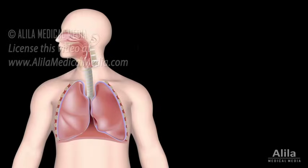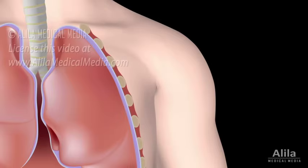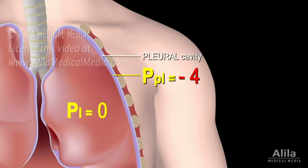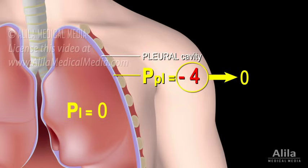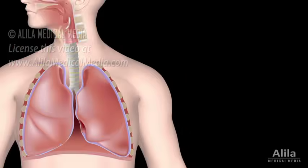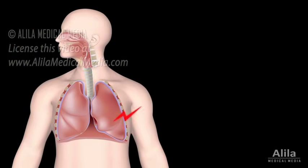The lungs are covered in a double-layer membrane, which forms a thin space surrounding the lungs called the pleural cavity. The pressure within the pleural cavity, or intrapleural pressure, is normally negative. This negative pressure acts like a suction to keep the lungs inflated. If this becomes zero, such as in the case of pneumothorax, when the chest wall is punctured and the pleural cavity has the same pressure as the outside air, the lung would collapse.